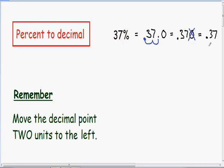Many people forget when going from percent to decimal or decimal to percent whether to move the decimal point two units to the right or two units to the left. One way to check your answer is that your decimal should always be smaller than your percent. Notice we have a decimal of .37 which is certainly smaller than our percentage which is 37.